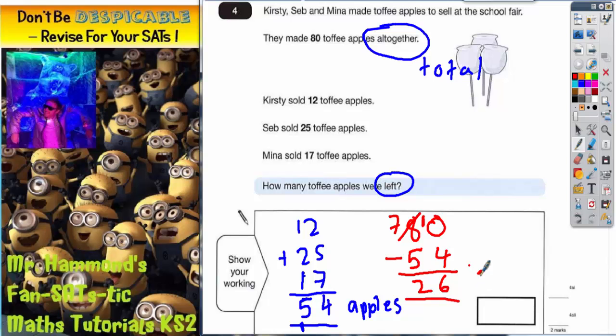So they must have had 26 toffee apples left. So your answer in the answer box needs to be 26.